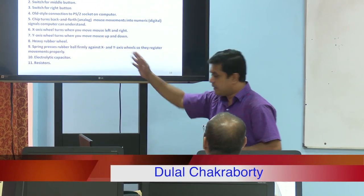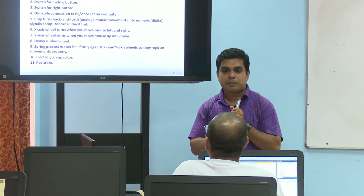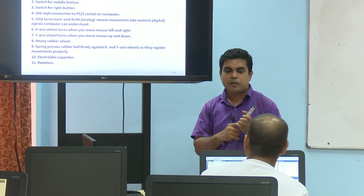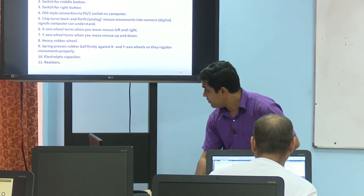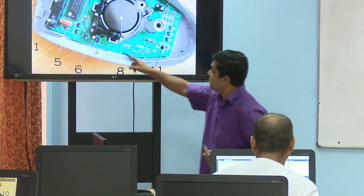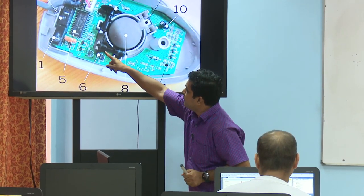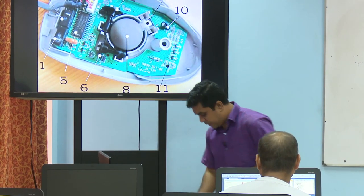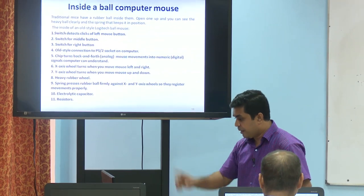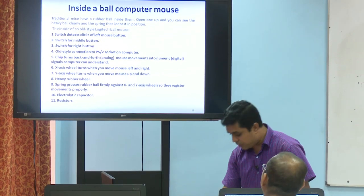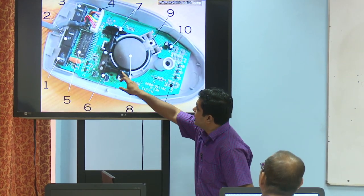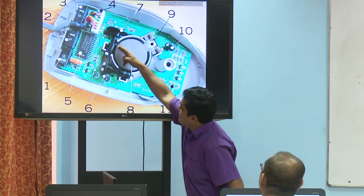Number 6: we have two rollers — the X axis and the Y axis. Number 6 is the coordinate roller for the X axis, and number 7 is for the Y axis.